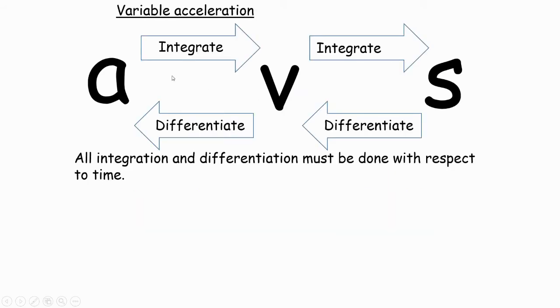A way of remembering things is going to be with this diagram. I think this diagram is useful to copy out. If you start with acceleration, you can integrate to find out velocity. And you can integrate that to find out distance traveled or displacement. And it's going to be the other way around. So, going from displacement, you're going to differentiate to get to velocity. And you're going to differentiate to get to acceleration.